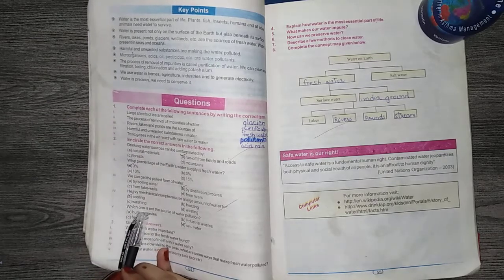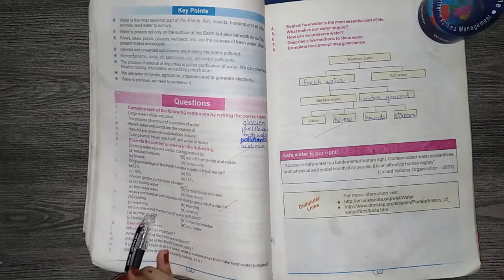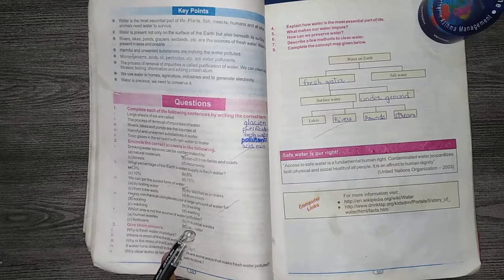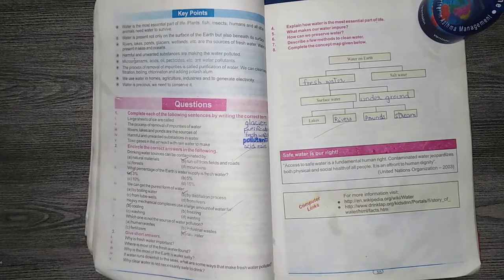Number 5, which one is not a source of water pollution? A, human waste, B, industrial waste, C, fertilizer, D, rainwater. The answer is D, rainwater. Rainwater is completely clean.